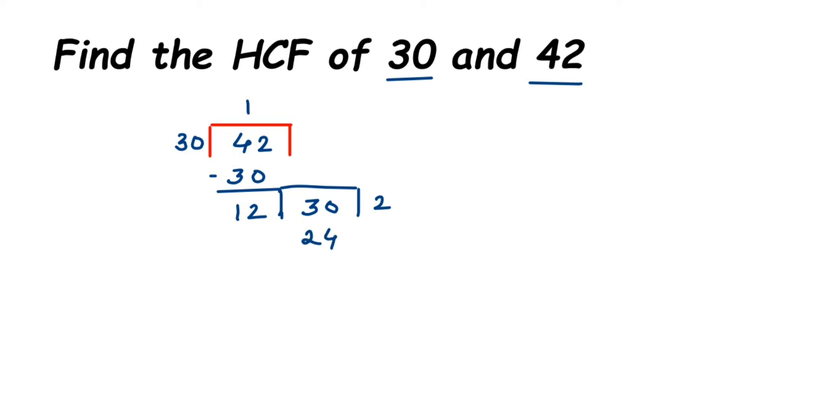Now do the normal division: dividing 30 by 12, we get 12 × 2 = 24, subtract from 30, and the remainder is 6. We keep going until we get a remainder of 0.